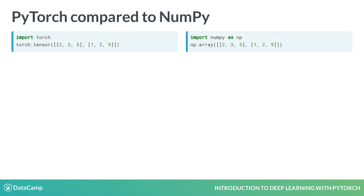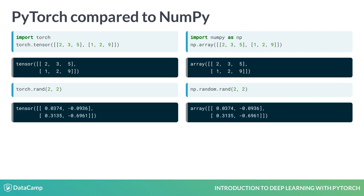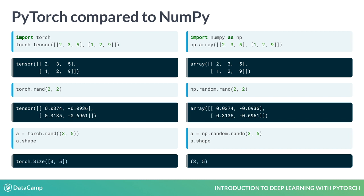PyTorch's equivalent of NumPy arrays is called a Torch Tensor. You can imagine a tensor as an array with an arbitrary number of dimensions. A tensor can be created by calling torch.Tensor, as you can see in the code block on the left. Like in NumPy, you can create random matrices by using torch.rand(dim1, dim2). Let's create a random matrix with size 2x2. Similarly, you can set variables to matrices and check their shape using the shape function.